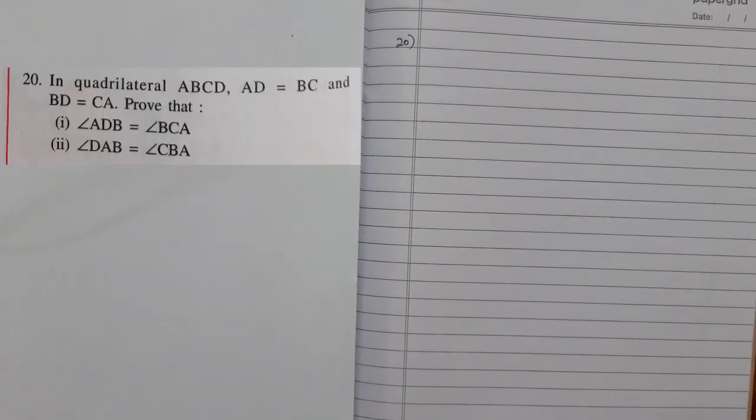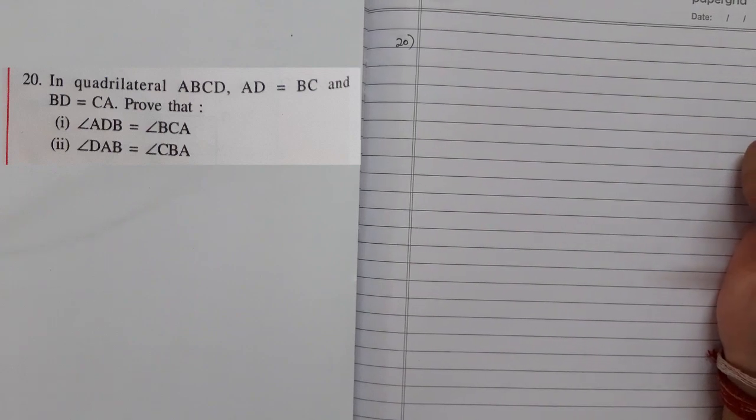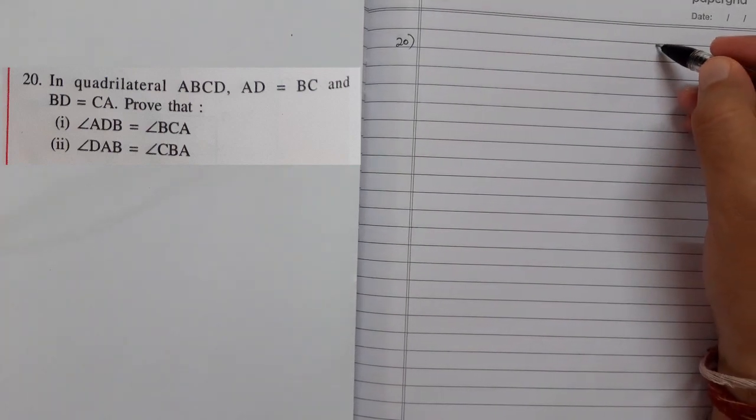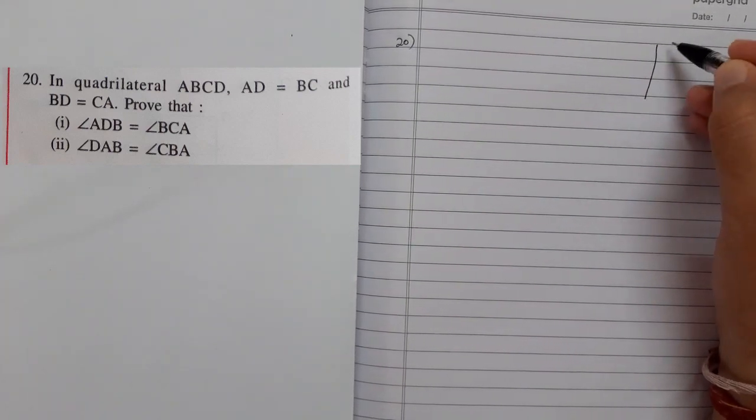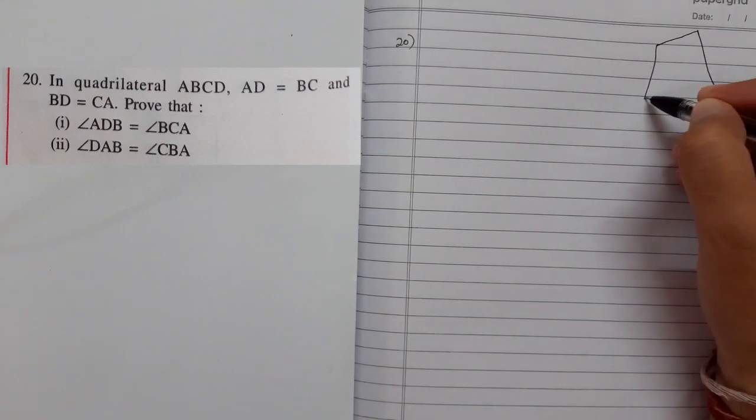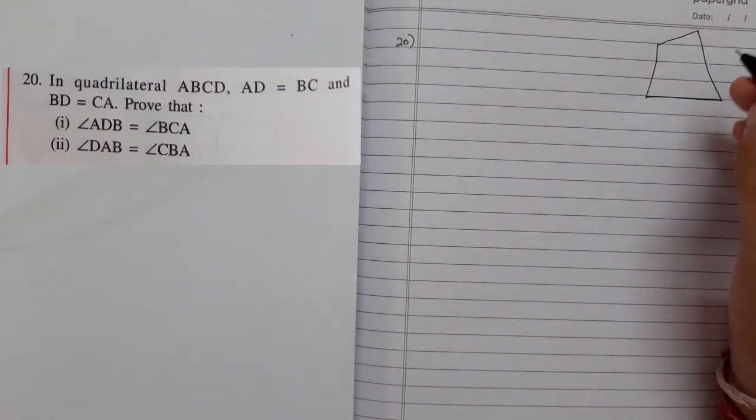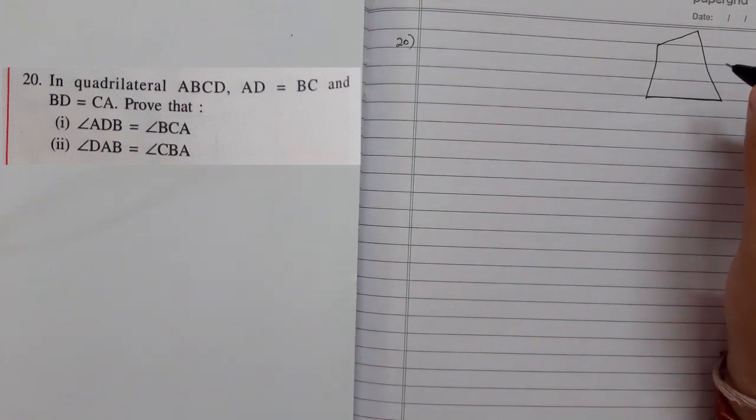Next question, we have a quadrilateral ABCD. If they're saying it's a quadrilateral, make sure you draw a simple quadrilateral which is not resembling any specific quadrilateral like square or rectangle, unless they say so.